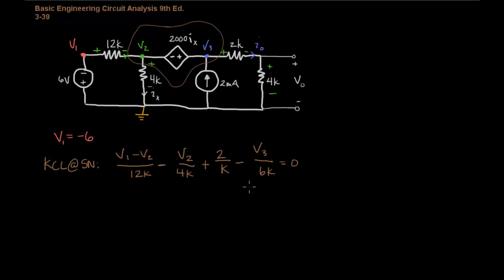Okay, so we have an auxiliary equation that will always appear from the, whenever we have a super node, and our equation is that higher potential is here because of this polarity that we've been given. So it's V3 minus V2 equals 2000 IX.